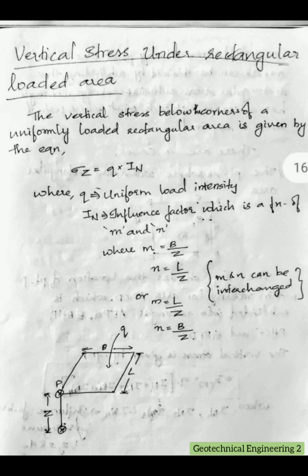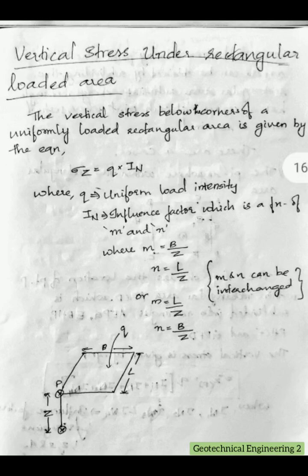Now coming to a rectangular loaded area, the equation for sigma in case of a rectangular loaded area is: sigma is equal to Q into I suffix N. Q is the uniform load intensity coming on the particular area, which we have already been using, and I_N is a new term — the influence factor.